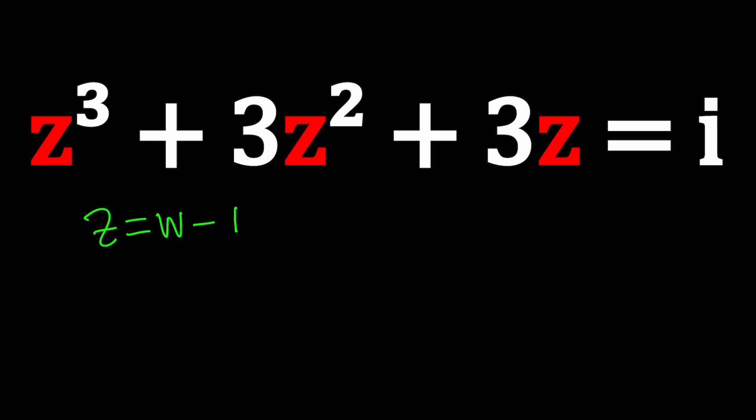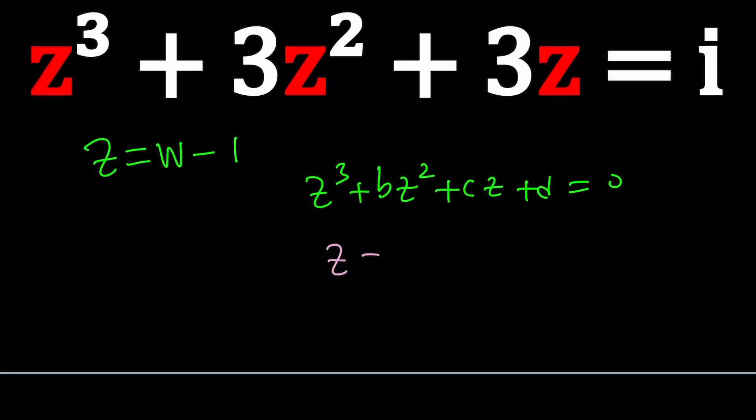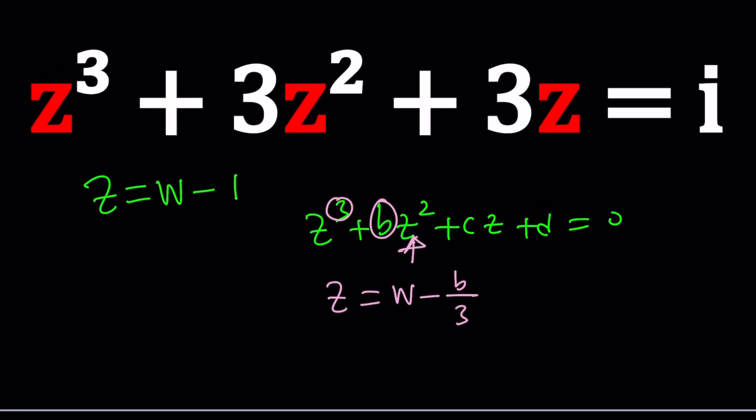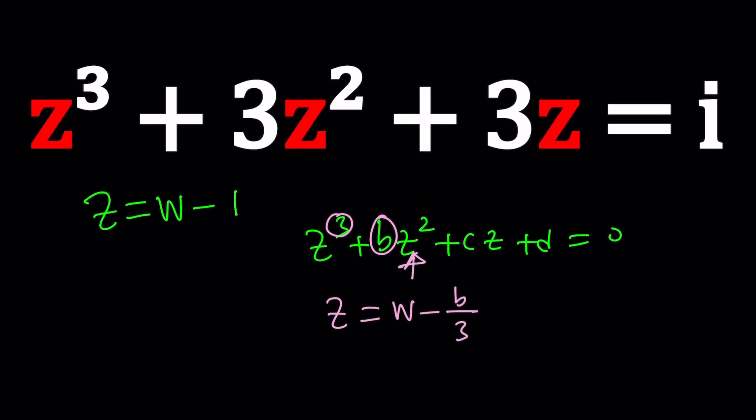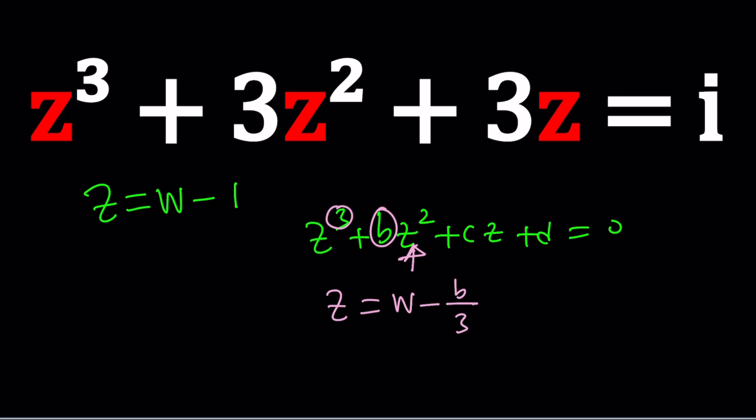Normally when you had a cubic equation like z cubed plus bz squared plus cz plus d equals 0, suppose a is equal to 1 just for simplicity's sake, you would basically replace z with another variable minus this number b divided by the degree which is 3 in this case. That's what you would do to get rid of the quadratic term. Because then you'll have a depressed cubic which you can solve by Cardano's formula or Ferrero's formula or Tartaglia's formula.